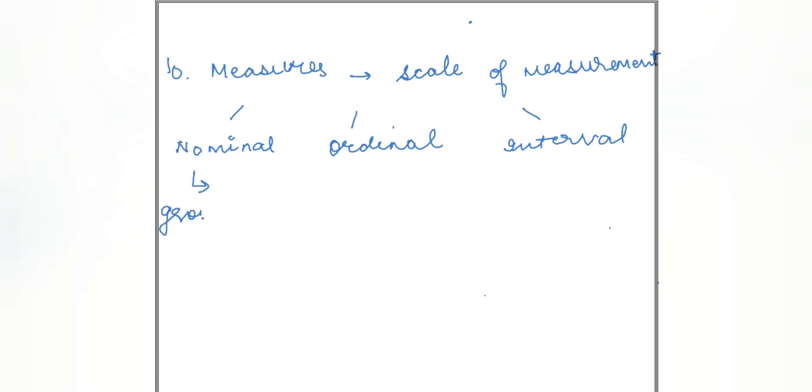Coming to the nominal. Anything which are grouped, labeled, classes are always nominal. Nominal is always used in qualitative analysis or qualitative study. For example, gender, marital status.